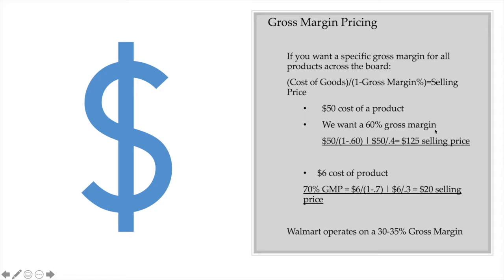We need to live at least at the 60% gross margin in our business ideas, because there are probably other expenses we've forgotten or haven't incurred yet, and we want a cushion to absorb those. If we wanted a 70% gross margin on a $6 product: 6 divided by 1 minus 0.7 equals 6 divided by 0.3. A 70% gross margin price — that product would sell for $20.